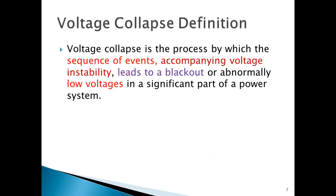Next, let me discuss voltage collapse. The voltage collapse phenomenon can be easily understood by the PV curve. It is defined as the process by which the sequence of events accumulating voltage instability leads to a blackout or abnormally low voltages in a significant part of a power system.